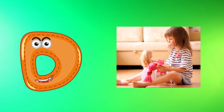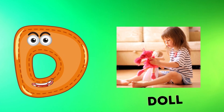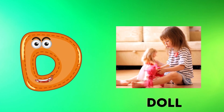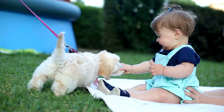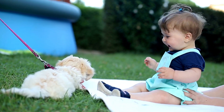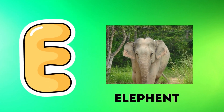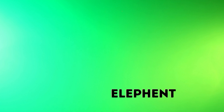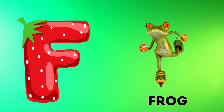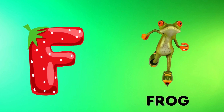D is for doll, d-d-doll. E is for elephant, e-e-elephant. F is for frog, f-f-frog.